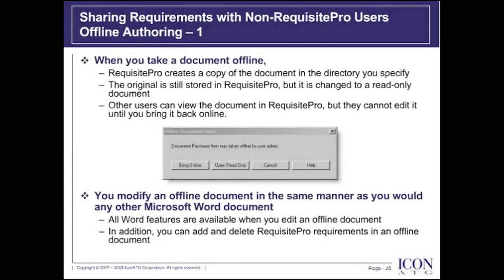When you bring the document back online, Requisite Pro replaces the read-only document with the modified document. Alternatively, you can elect to cancel the offline process. When you do, Requisite Pro restores the original document, removing its read-only state so all users can again modify it within Requisite Pro.